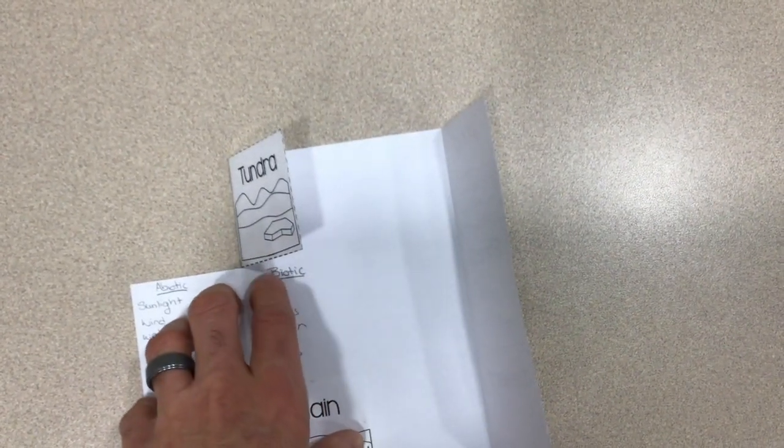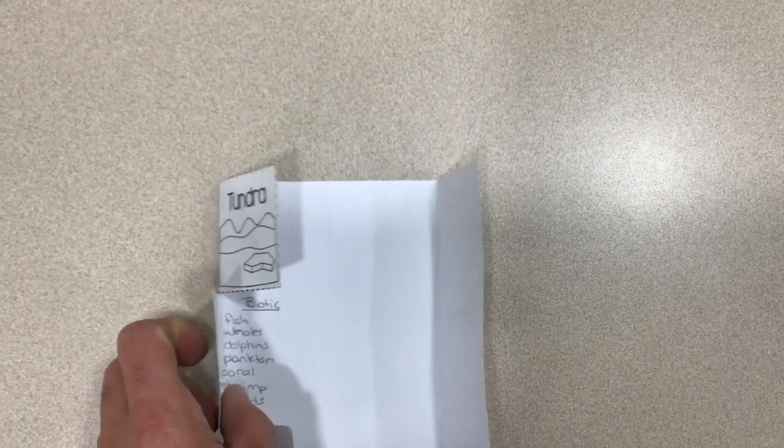And then you're going to go on the inside here and write 'biotic.' And then you're going to write some examples of things that are found in the ocean that are living.